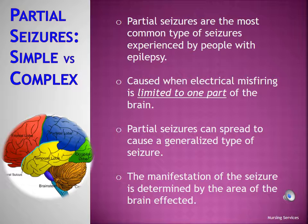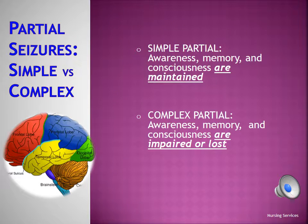Partial seizures are the most common type of seizures experienced by people with epilepsy. Unlike generalized seizures, partial seizures only affect one area of the brain but may spread to other areas, causing a generalized type of seizure. The manifestations of the seizure are determined by the specific area of the brain affected. There are two types of partial seizures: simple and complex. The only difference is that awareness, memory, and consciousness are maintained during a simple partial seizure, whereas they are impaired or lost with complex partial seizures.